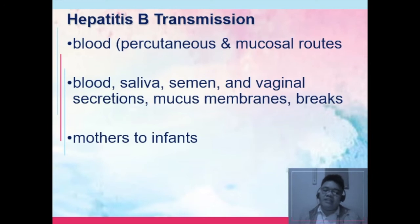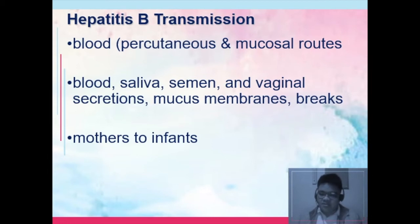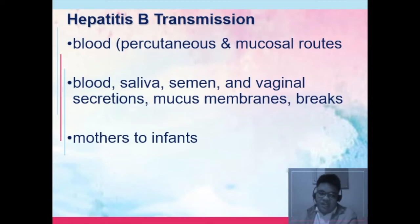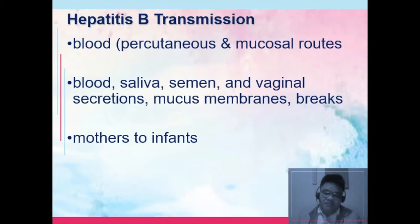Hepatitis B is transmitted through blood via percutaneous and mucosal routes — blood, saliva, semen, vaginal secretions, mucous membranes. Mother-to-infant transmission is very likely, which is why we give the hepatitis B vaccine to newborn babies. The transmission from mother to infant does not usually occur through the placenta; it usually occurs during exposure of the child during childbirth and exposure to the blood during delivery.